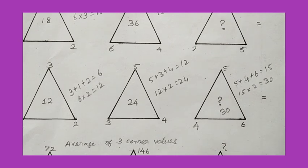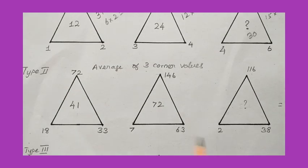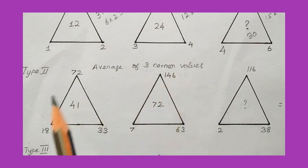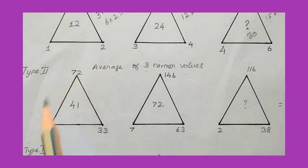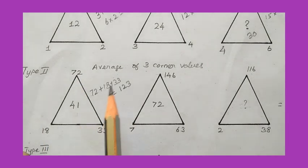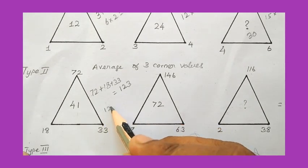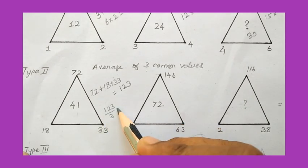We have completed two Type 1 problems. Now we move to Type 2. In Type 2, the concept is finding the average of the three corner values — add the three corners first, then divide by 3. For the first triangle, 72 plus 18 plus 33 gives 123. Dividing 123 by 3 gives the average as 41.